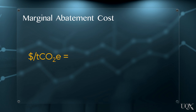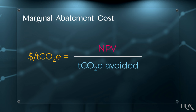The cost per tonne of CO2 equivalent reduced is found by taking the net present value — which you should have already derived from your financial analysis — dividing it by the total volume of abatement the project will achieve over its lifetime, and then multiplying this number by negative 1. This last part of the equation is important as it translates a positive NPV into a negative abatement cost saving figure, and vice versa.